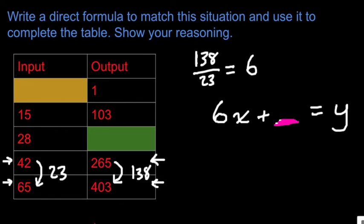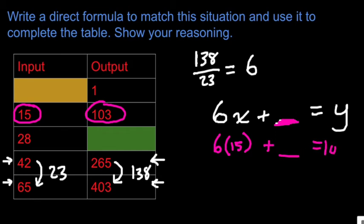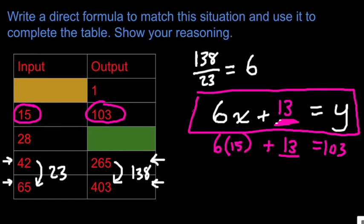I'm going to pick any position that I know both the input and the output. So let's take this guy. I'm going to use this formula with those numbers. Input, 15. Output, 103. 6 times 15 is 90. I need to add 13 to that to get 103. That means my adjustment for this formula is going to be plus 13. That's a direct formula. 6 times the input plus 13 equals the output.